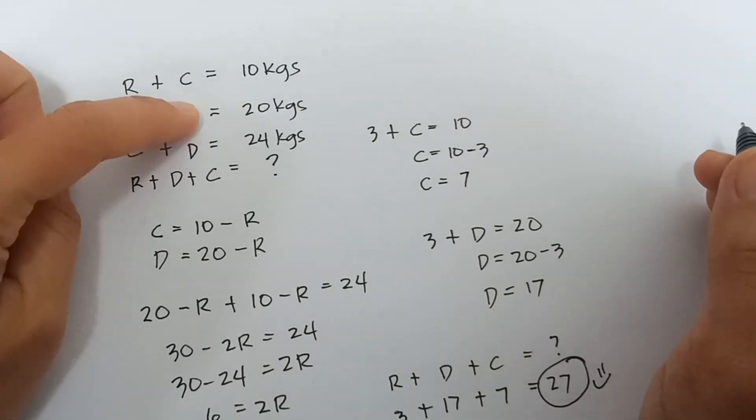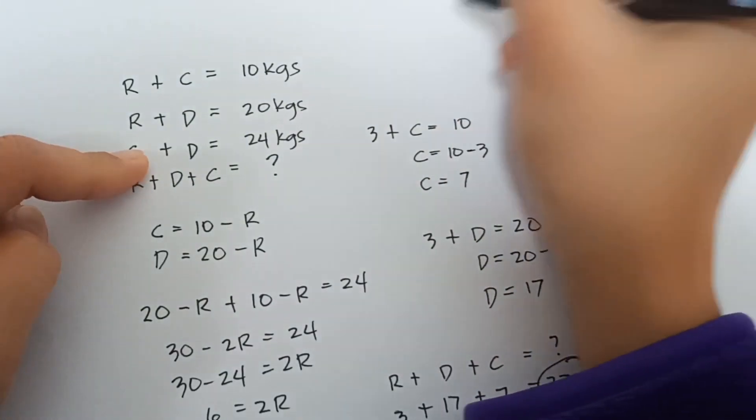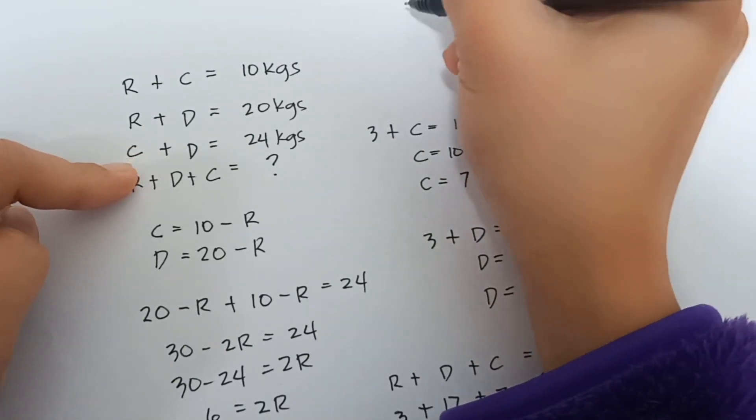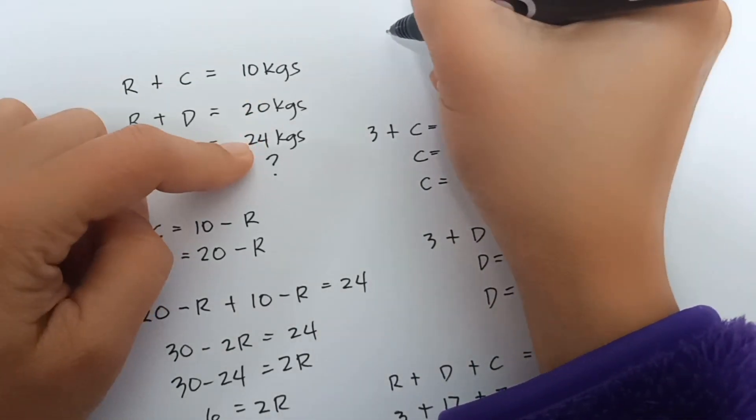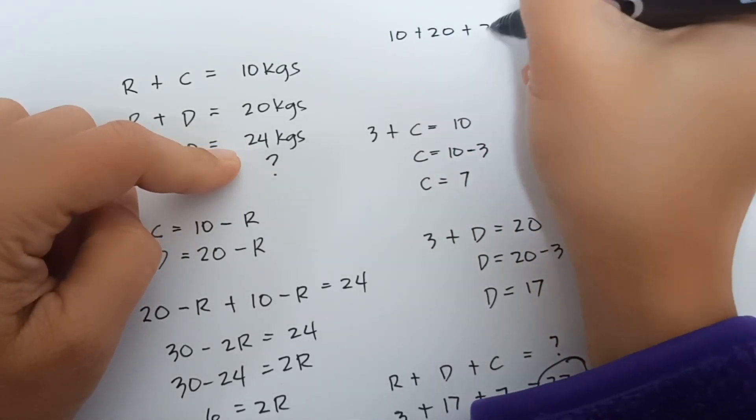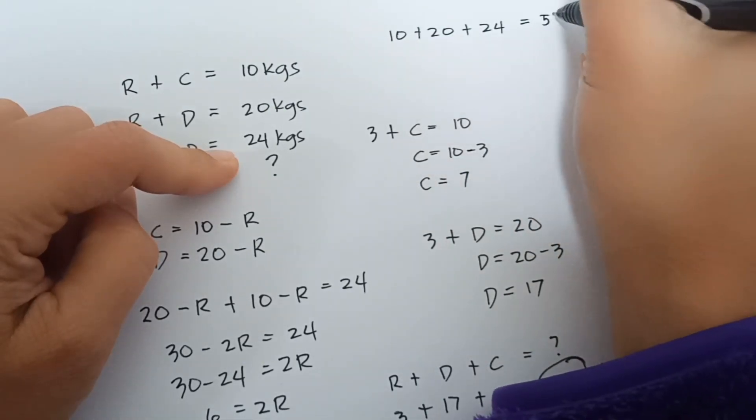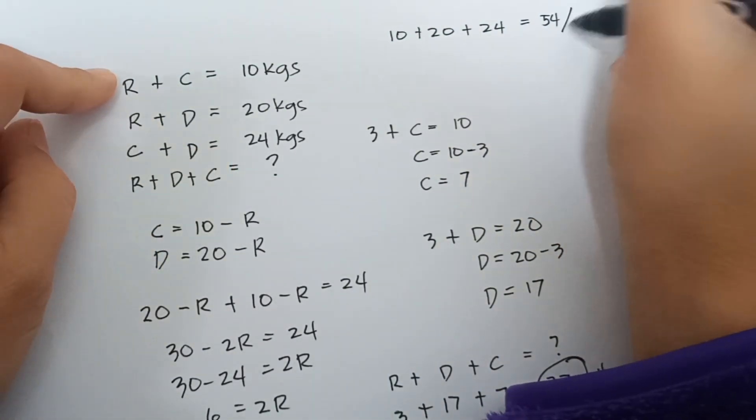2 rabbits, 2 dogs, and 2 cats. So, you need to do is add all together. 10 plus 20 plus 24 equals 54. Then, divide it by 2 equals 27. Correct, right?